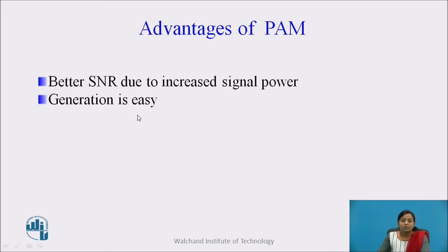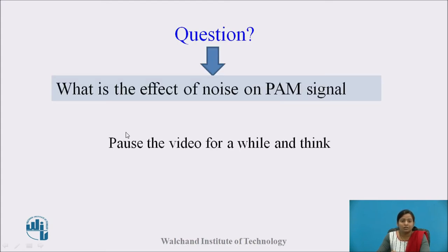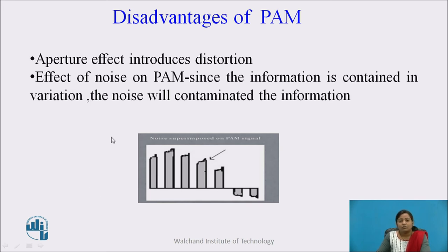Advantages of PAM: it has a better signal to noise ratio due to increased signal power. All the circuits for PAM modulation as well as demodulation are simple, so its generation and detection is easy. A question: what is the effect of noise on a PAM signal? This comes in the disadvantages of PAM. Since the information in the PAM signal is in the form of amplitude variation, and noise effect is greater on the amplitude of any signal, noise will distort the PAM signal. Another disadvantage is the aperture effect introduced in the PAM signal, especially in flat-top PAM.